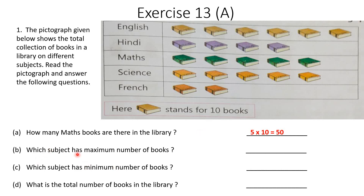Next question: which subject has the maximum number of books? English has the most books — 6 books shown, so 6 into 10 gives 60 books. English subject has the maximum number of books. Which subject has the minimum number of books? French — you can see 2 books, so 2 into 10 gives 20. French subject has the minimum number of books.